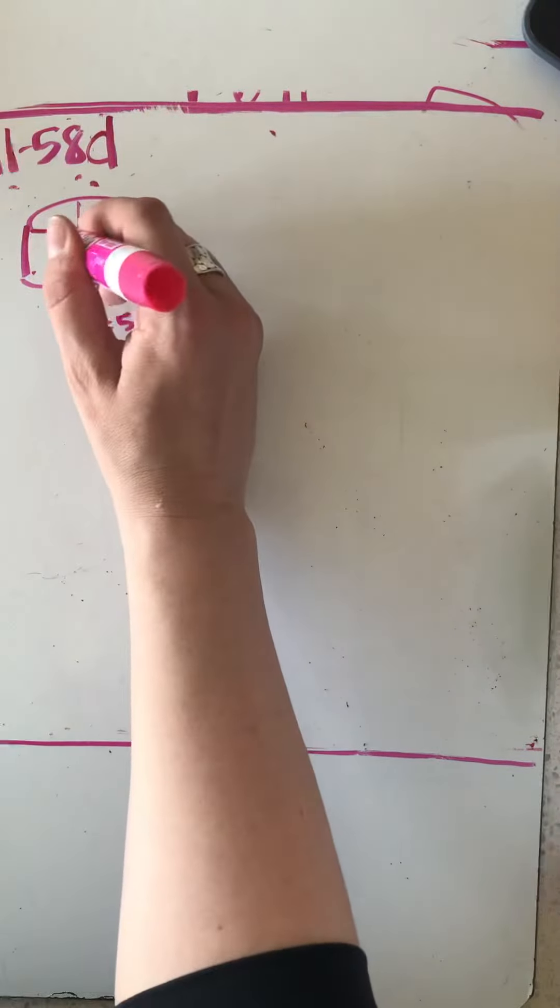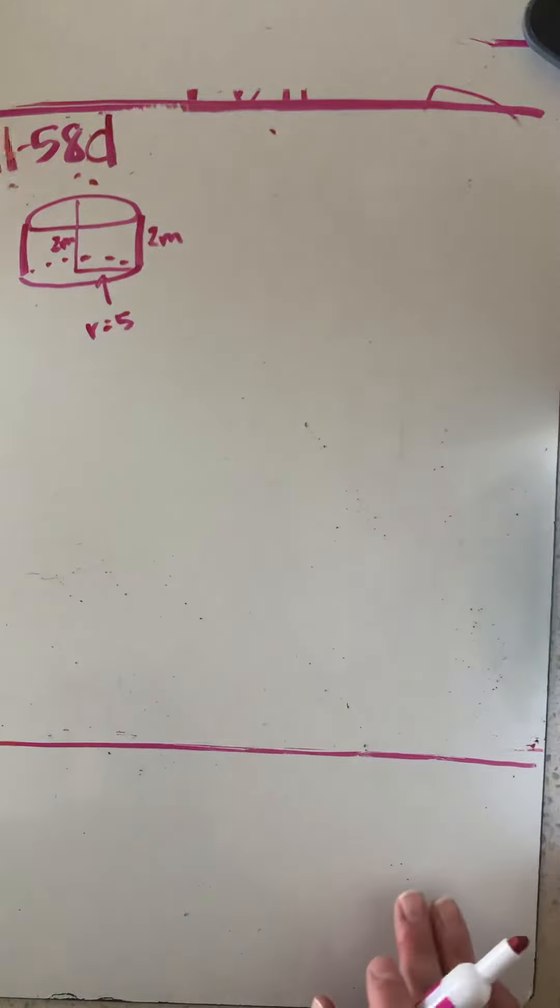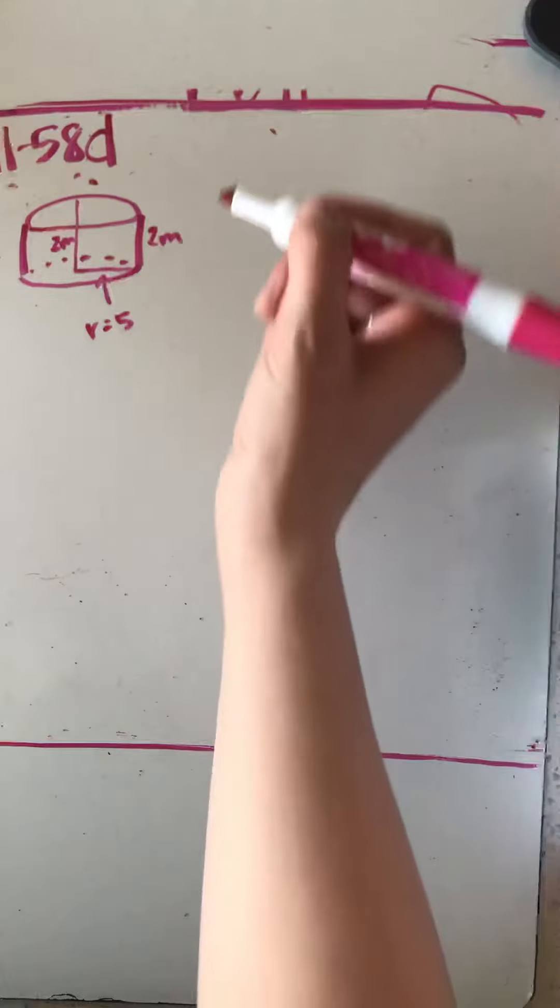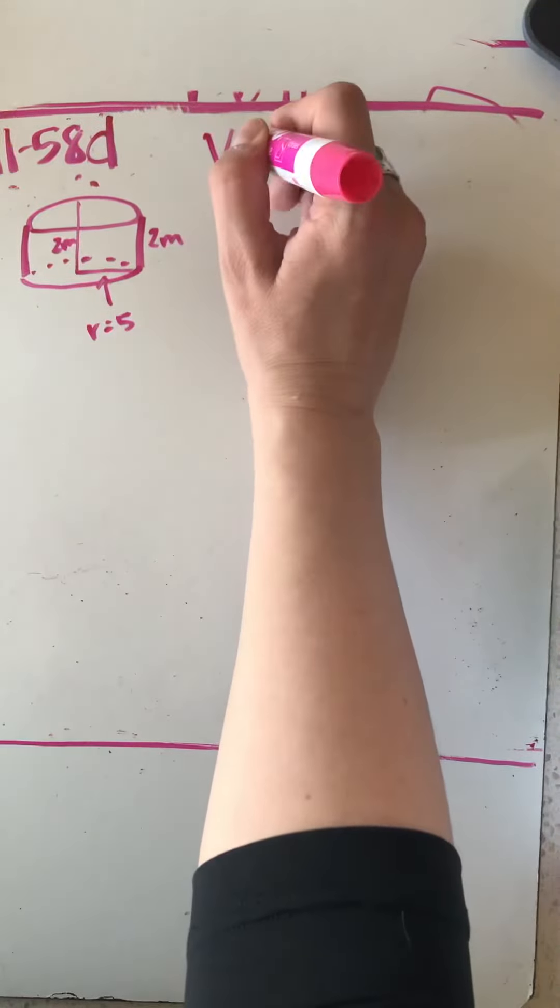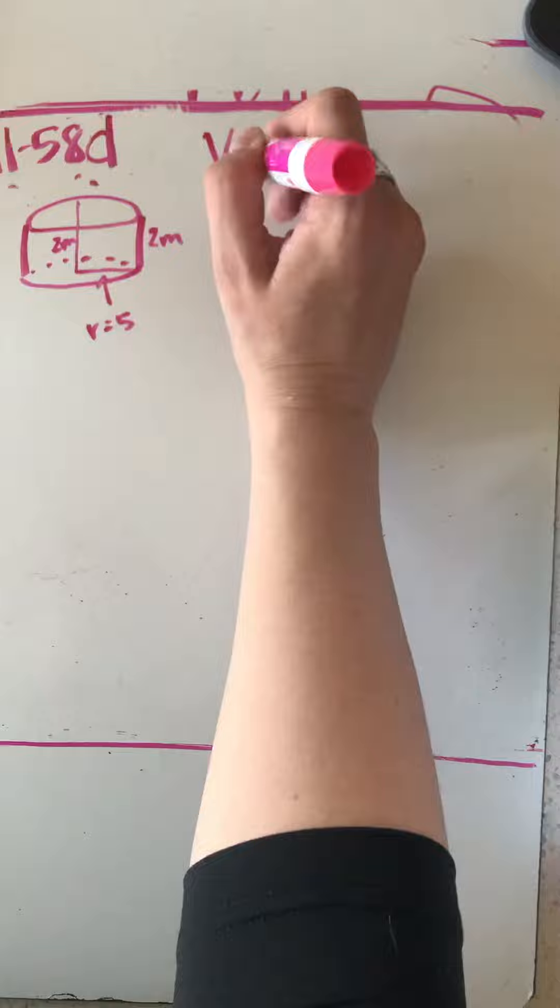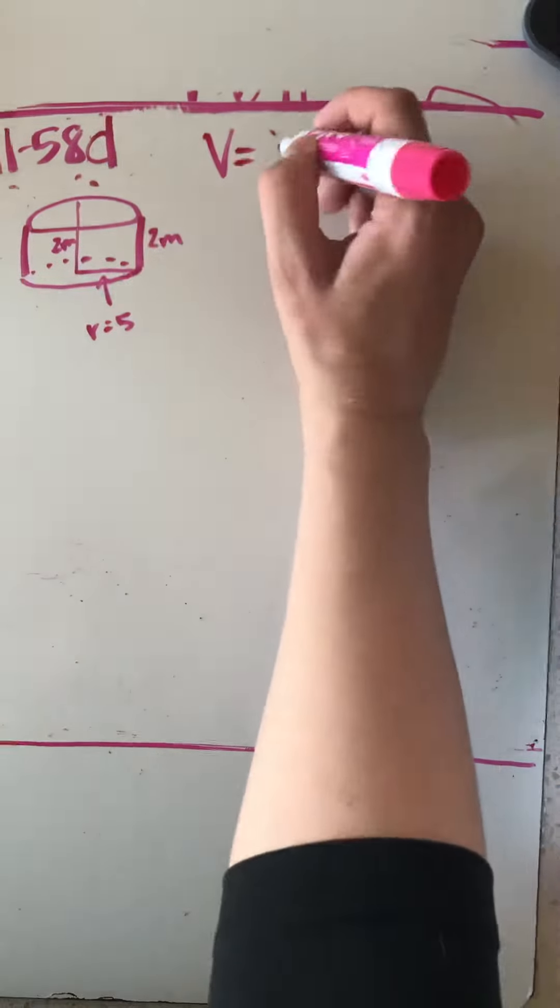So this length right here is 2 meters as well. The volume of a cylinder is going to be the base area times the height, and because the base is a circle you know your equation is going to be πr² times the height.